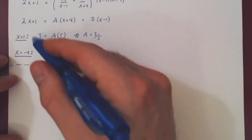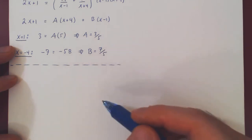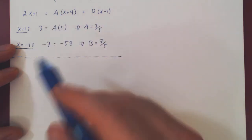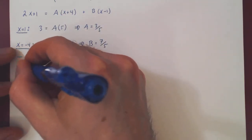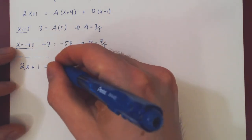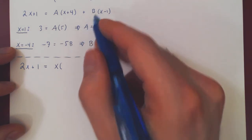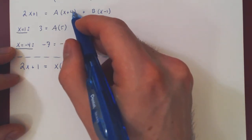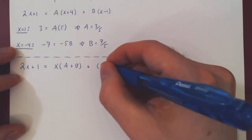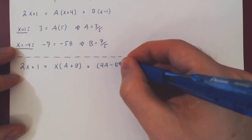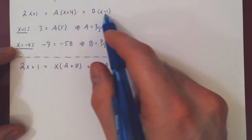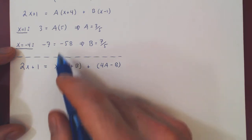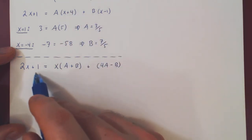Whenever the first method fails, fall back on the second method — simply rewrite the polynomial with the unknown coefficients in canonical form. The multiple of x is A times x plus B times x, giving a plus b times x. The constant term is 4A minus B. All constant terms are grouped together and all multiples of x are grouped together; we do the same for x squared, x cubed, and so forth.